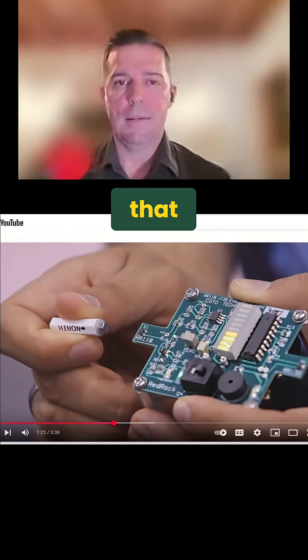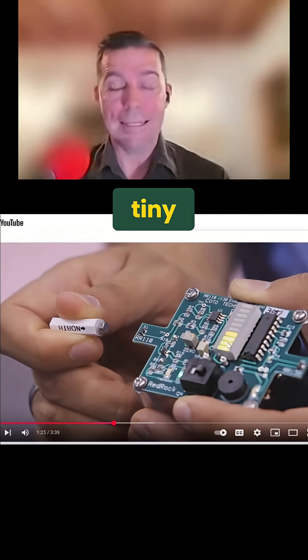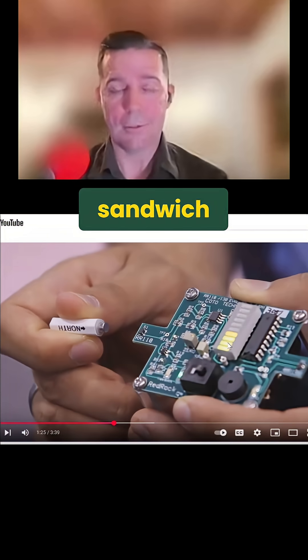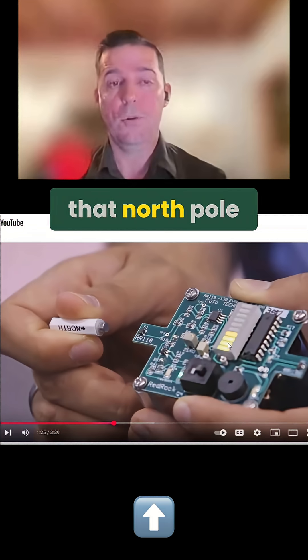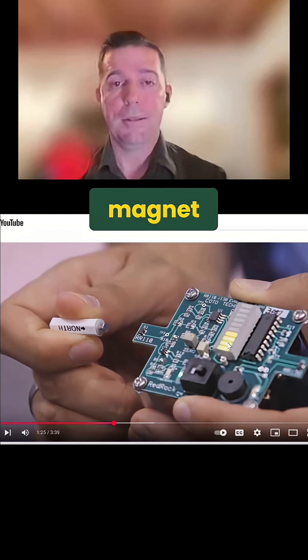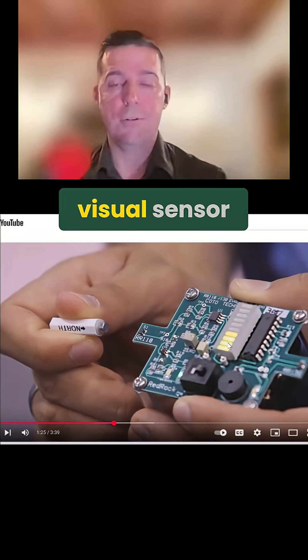That TMR little tiny device, eight atoms thick sandwich, incredibly small, is able to detect that north pole magnet and has a visual sensor off.